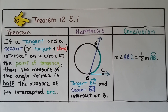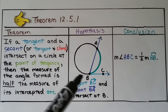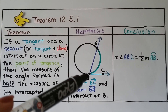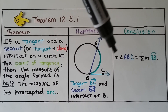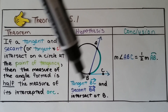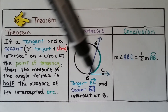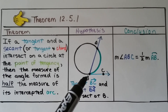For your notes, theorem 12.5.1 says: if a tangent and a secant — or a tangent and a chord — intersect on a circle at the point of tangency, then the measure of the angle formed is half the measure of its intercepted arc. So tangent BC and secant BA intersect at B, which is the point of tangency. The measure of angle ABC is equal to half the measure of arc AB — this green arc.